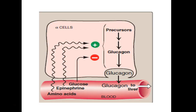How is the secretion of glucagon regulated? The alpha cell of the pancreas produces glucagon, which moves out and acts in the blood on the liver. Presence of epinephrine and amino acids stimulates glucagon formation or secretion, but glucose inhibits the secretion of glucagon.